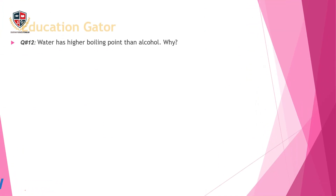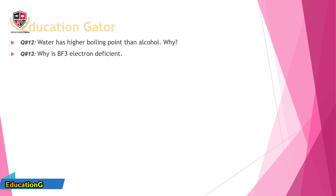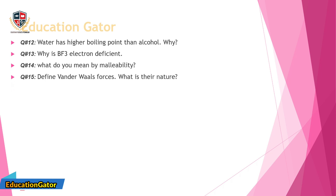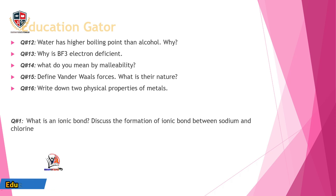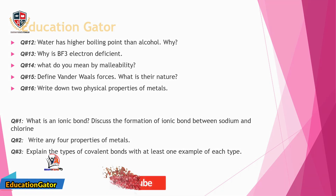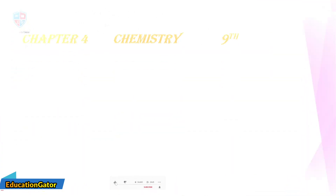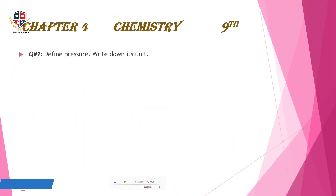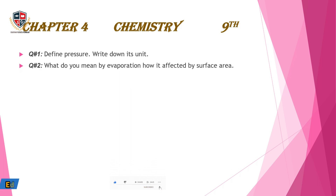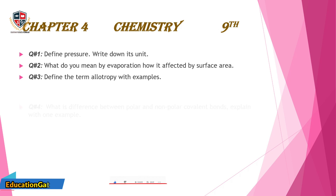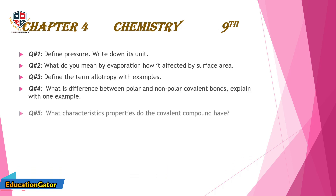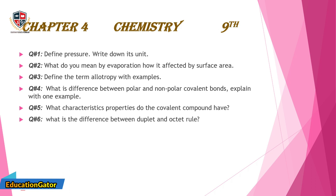Question 6: What is the difference between duplet and octet rule? Question 7: Why do atoms react? Question 8: Define metallic bond. Question 9: Define bond pair. Question 10: What is the coordinate covalent bond? Show it with one example. Question 11: Define hydrogen bonding and give an example. Question 12: Water has a higher boiling point than alcohol — why? Question 13: Why is BF3 electron deficient? Question 14: What do you mean by malleability? Question 15: Define van der Waals forces. What is their nature? Question 16: Write down two physical properties of metals.